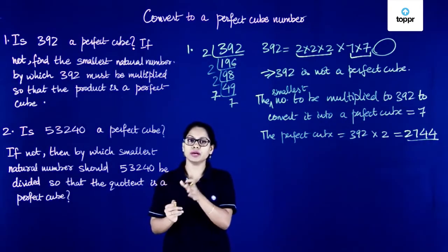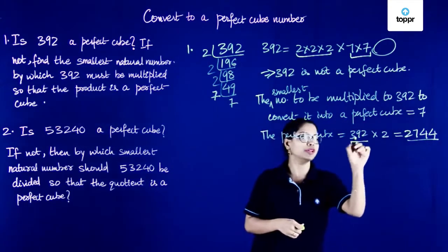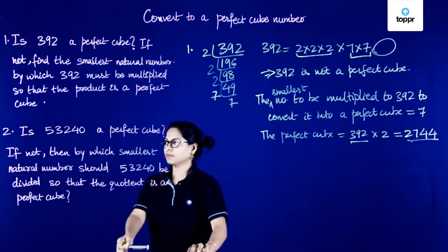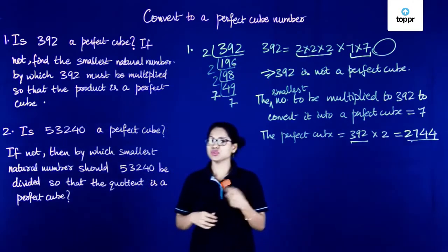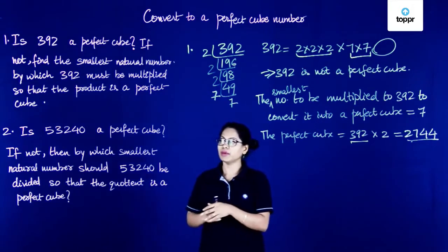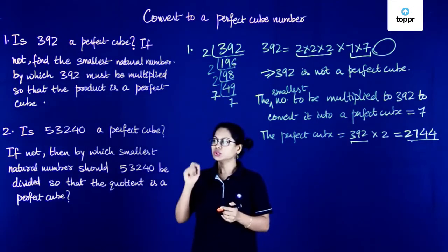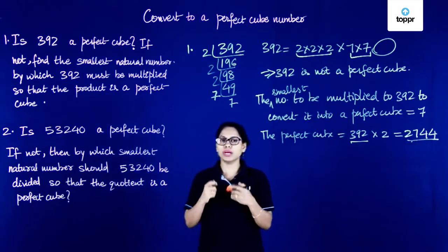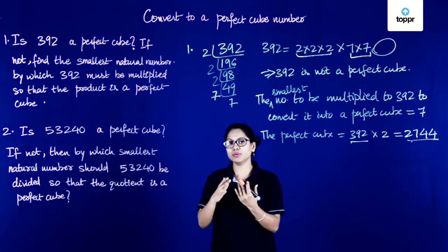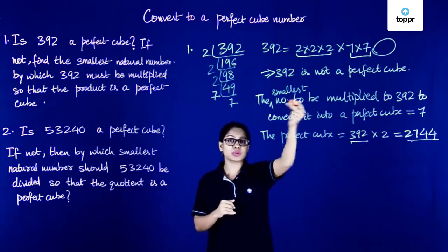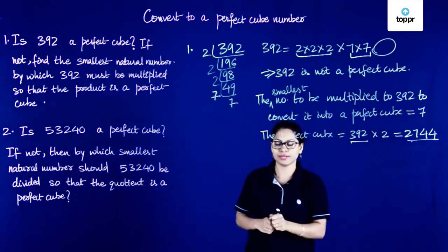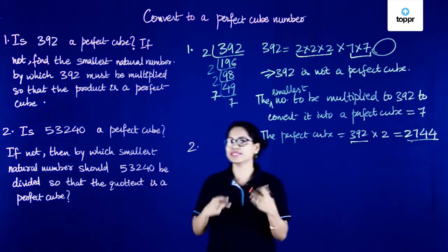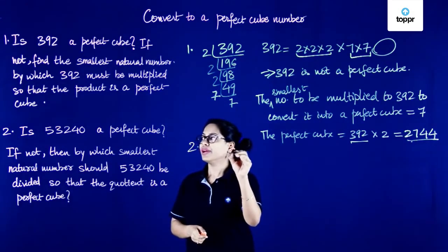Here we converted a number that was not a perfect cube into a number that is a perfect cube. Let's now move on to the second question. Is 53,240 a perfect cube? If not, by which smallest natural number should 53,240 be divided so that the quotient is a perfect cube? Now we have to find the number by which to divide, unlike the first question where we found the number to multiply. We will start by the prime factorization of 53,240.